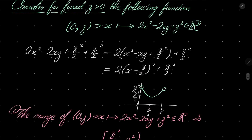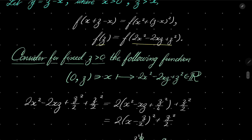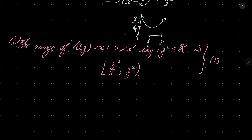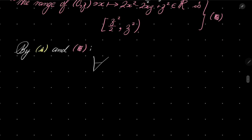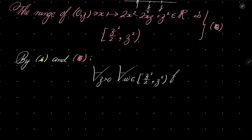So the range of our function, which takes x from the interval (0, z) and maps it to 2x² - 2xz + z², is the interval [z²/2, z²). That means that for every number w in this interval, f(z) equals f(w). Let's call the original functional equation condition triangle, and this range result condition square. By triangle and square, for every positive number z and every w from [z²/2, z²), f(z) equals f(w).